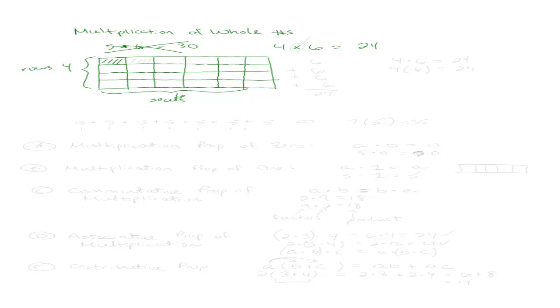So if you have a total of 4 rows and a total of 6 seats per row, in reality you actually have 24 seats. You can go ahead and count, and if you count all these little squares together you're going to get a total of 24 seats.